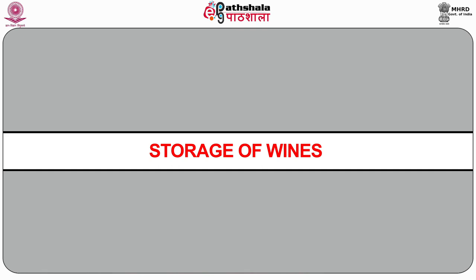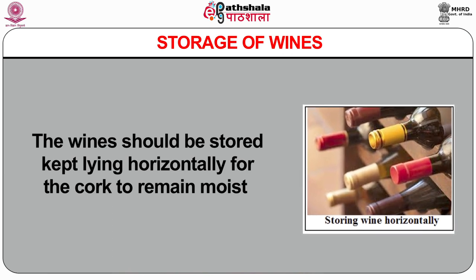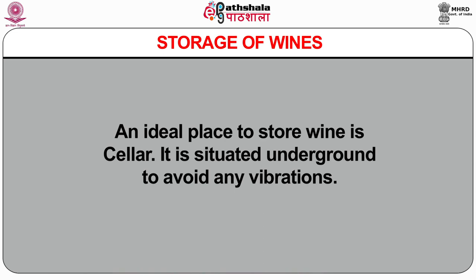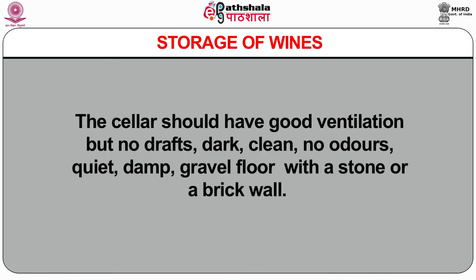The wines should be stored kept lying horizontally for the cork to remain moist, and make sure that wine should not be exposed to light as light damages wines, especially white wines and sparkling wines. An ideal place to store wine is a cellar, situated underground to avoid any vibrations. The cellar should have good ventilation but no drafts, be dark, clean, odour-free, quiet and damp, with a gravel floor and stone or brick walls. The temperature of the cellar should be cool and constant between 8°C to 18°C, and humidity should be 75% to 80% — too much humidity can cause wine labels to peel off and lack of humidity will result in dryness of the cork. Wine in the glass is poured as: red — one third full; white — one half; and sparkling wine — three quarters.